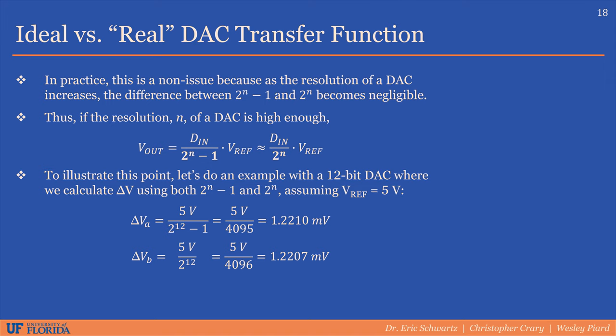This means that for this example, using 2^n minus 1 gives a result that is approximately 0.02% higher than using 2^n. In real-world applications, this amount of error is far less than error induced by environmental factors or even improper calibration.